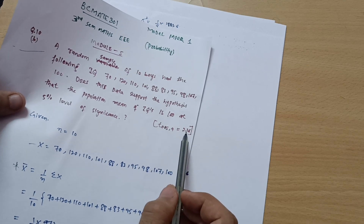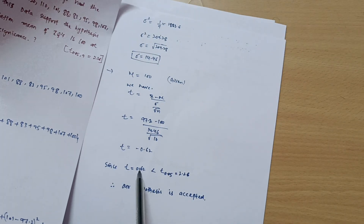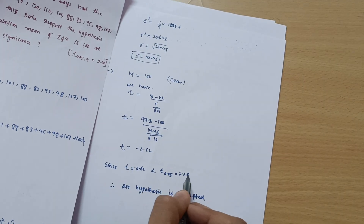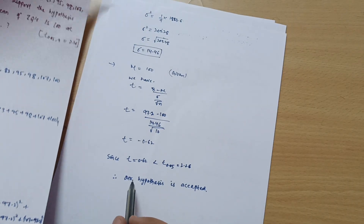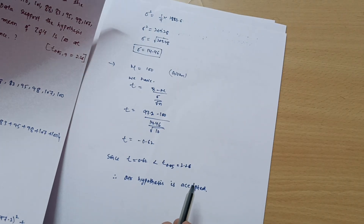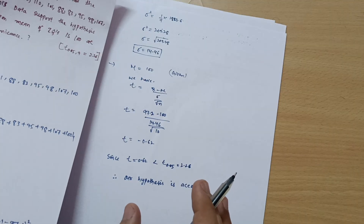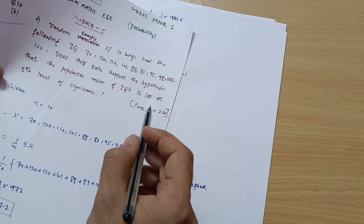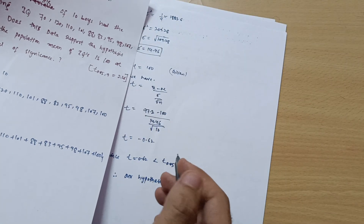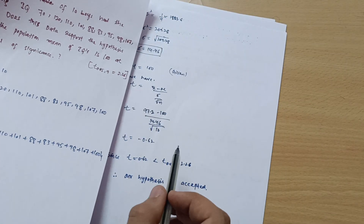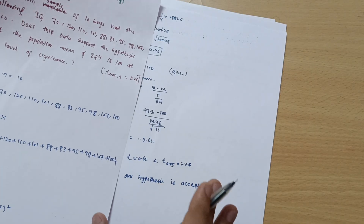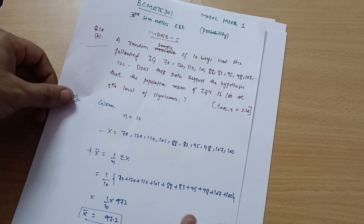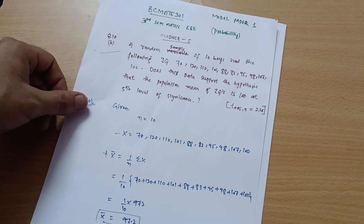The table value at t at 0.05 — the 5 percent level of significance — is 2.26. Since the calculated value of 0.62 (in absolute terms) is less than 2.26, our conclusion is that the hypothesis is accepted. If the calculated value were greater than 2.26, the hypothesis would be rejected. This is the complete procedure for this T-distribution problem.